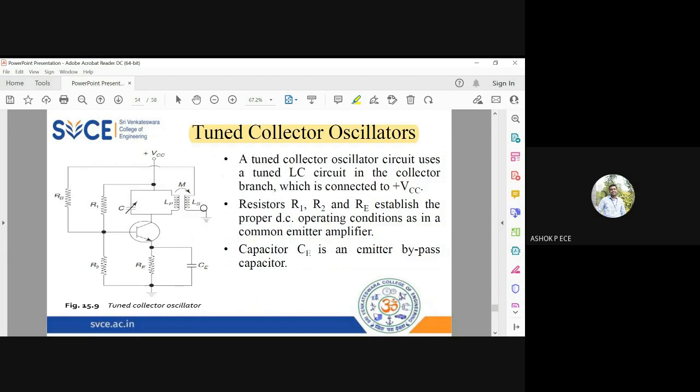I'm going to use a transformer and the secondary is connected to the base as a feedback signal. So tuned collector oscillator is going to use a tuned circuit in the collector branch. You know R1 and R2 and RE will establish the Q point, C is the bypass capacitor.